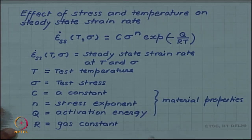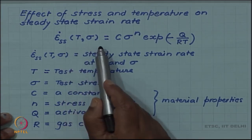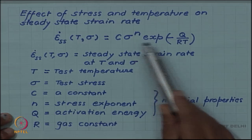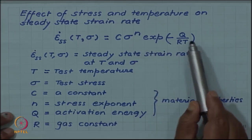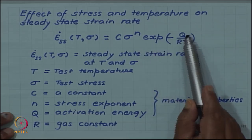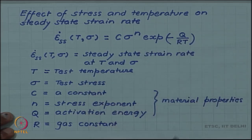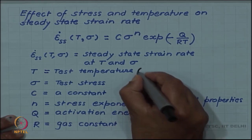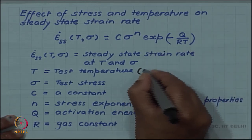Here is the equation: steady state strain rate depends on the stress and temperature. The temperature dependence is the familiar exponential dependence, exponential minus Q by RT, where T is the test temperature in Kelvin. In these equations, it is always in Kelvin.